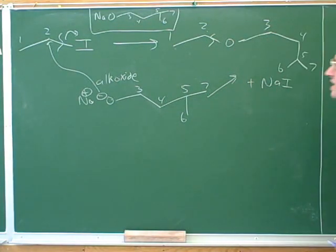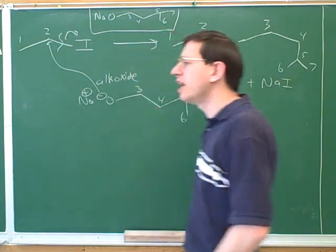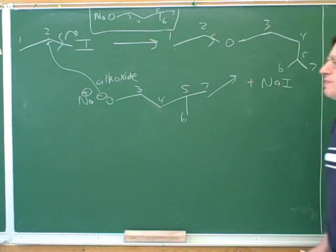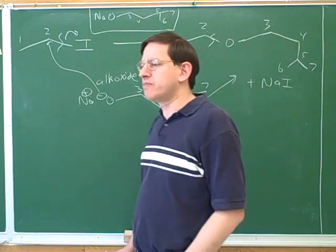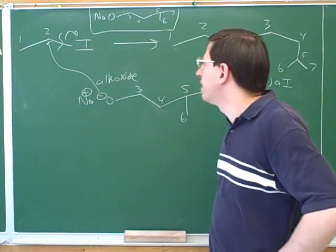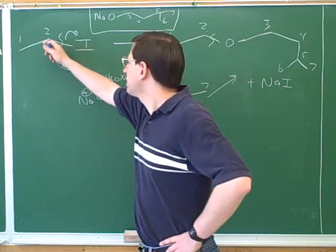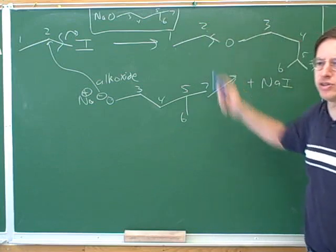We went through some important techniques for solving synthesis problems. Very important is to try to number the corresponding carbons. That can be frustrating for students, because oftentimes, we can't be sure what the right numbers are. We just have to take a guess. And if the numbers don't work out, we have to try something else. But it turned out here well to guess that the number one and two carbon here on the left were the same as this number one and two carbon.